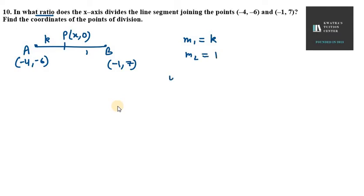Now you will know that the formula of y is M1 y2 plus M2 y1 over M1 plus M2. So y value here is 0. M1 is K, Y2 is 7. Then M2 is 1, Y1 is minus 6.